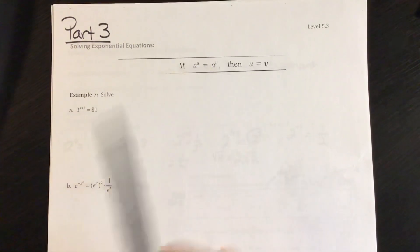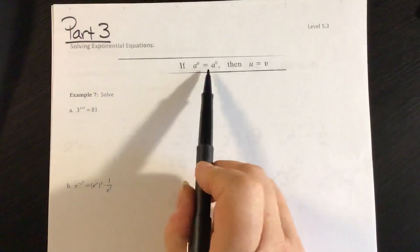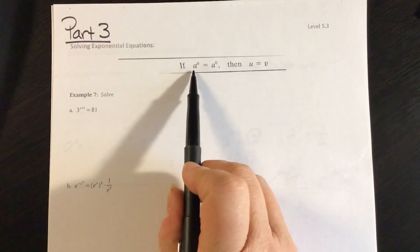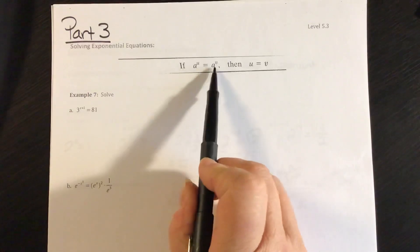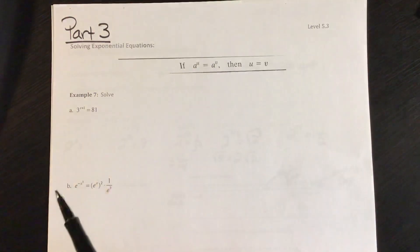So if I rephrase that, if you have an equation and you have the same base, then the exponents have to be equal.